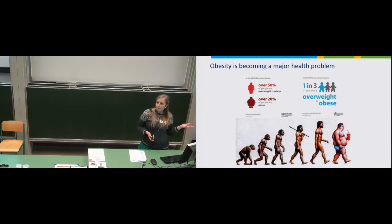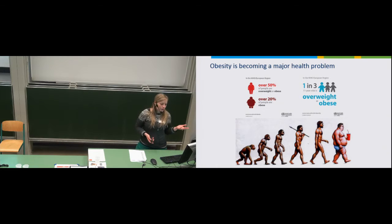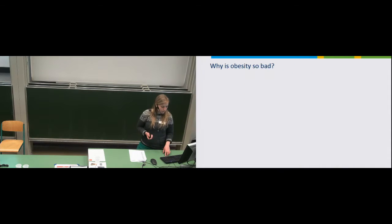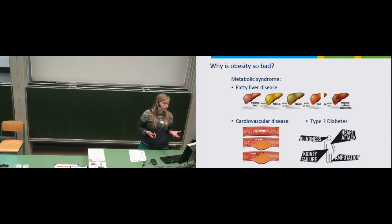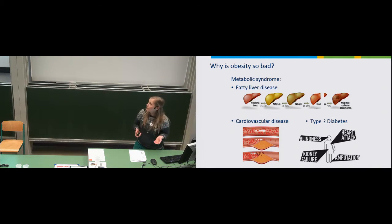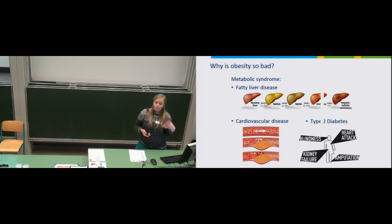Obesity is becoming a major health problem in Western countries. In Europe over 50% of the people are obese or overweight, and one in three children in Europe are obese or overweight. But why is obesity so bad? It leads to a bunch of secondary diseases clustered in the metabolic syndrome — for example fatty liver disease which can eventually cause liver cancer, cardiovascular disease, type 2 diabetes — all of which have a major impact on the health system.